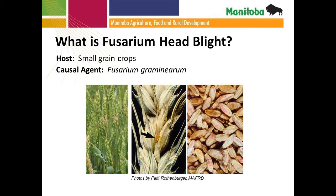So really, what is fusarium head blight? It's a fungal disease of small grain crops, which can include wheat, barley, oats, corn, triticale, and rye. In terms of the causal agent, the most common one we hear about is Fusarium graminearum. Unfortunately, there are other causal agents as well — Fusarium culmorum, Fusarium avenaceum — but Fusarium graminearum is the one we hear most about.